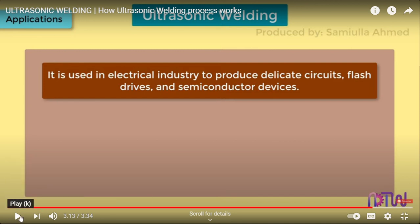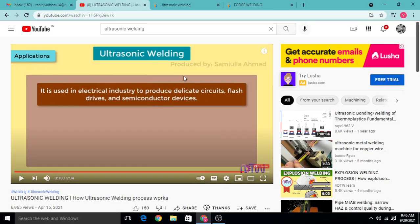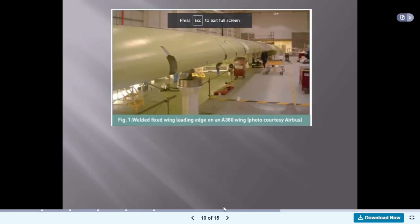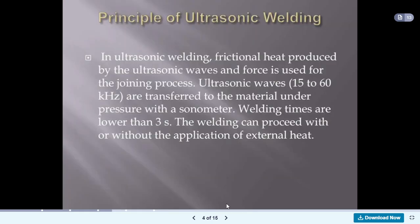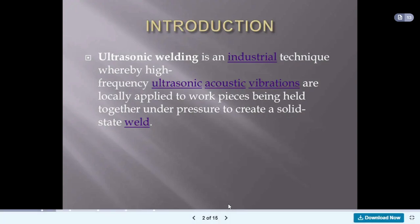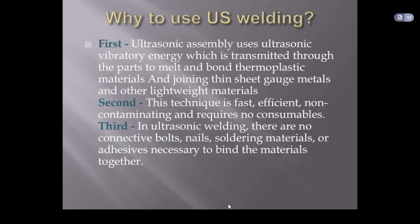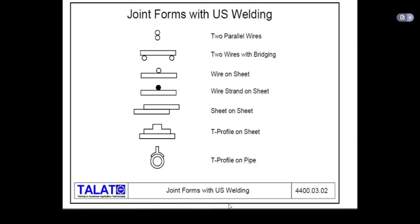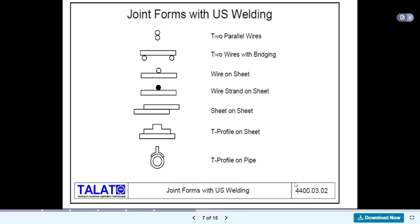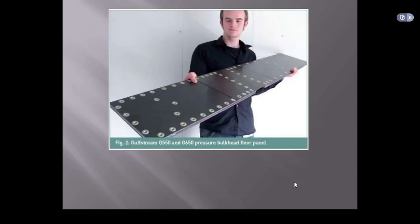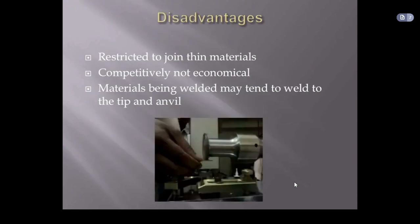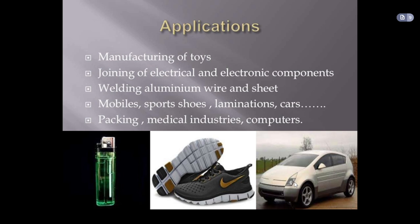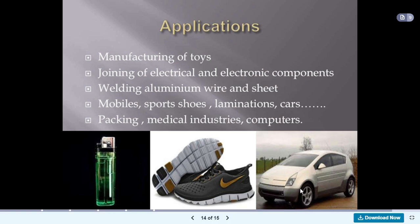To summarize today's session on ultrasonic welding: we discussed what ultrasonic welding is, its principles, how the welding process is carried out, the different parts of the equipment, the types of joints that can be produced, the advantages and disadvantages, and the applications. In the next lecture we will discuss the next part of unit number four.